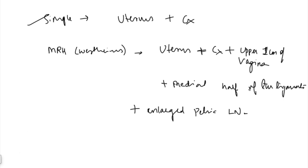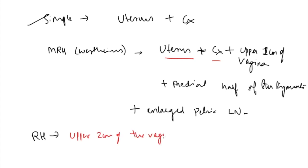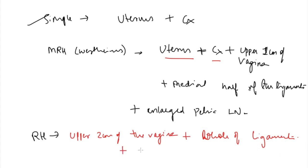Radical hysterectomy: removal of uterus, cervix, upper 2 cm of vagina, the whole of the supporting ligaments (cardinal and uterosacral), pelvic lymph nodes, and para-aortic lymph nodes.